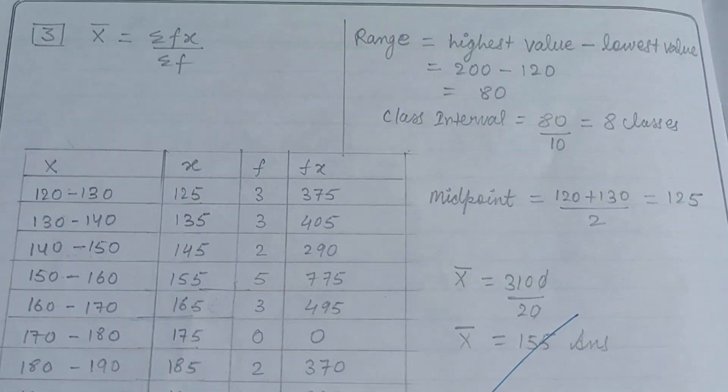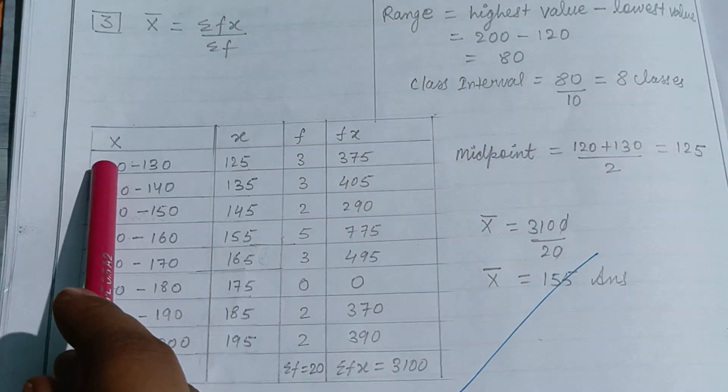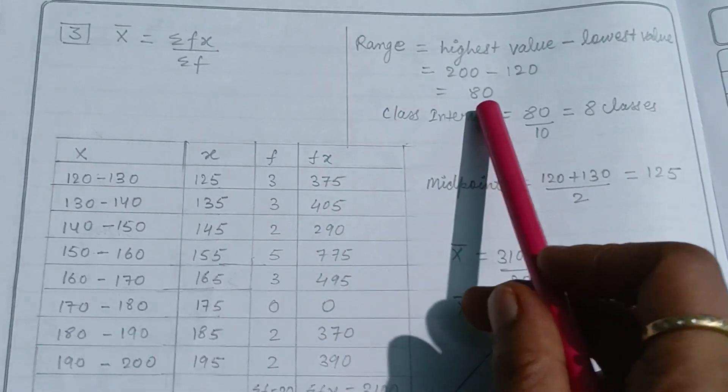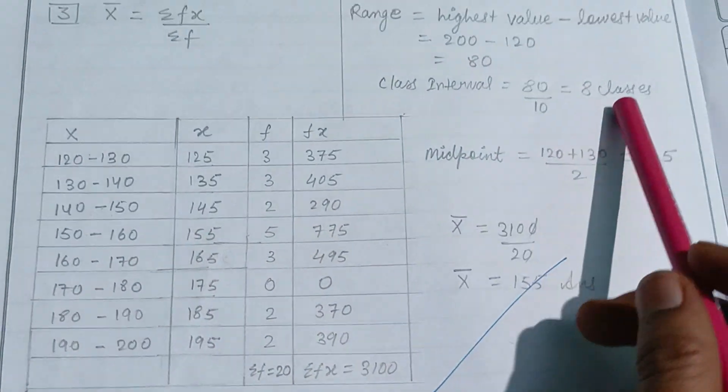By subtracting the highest value minus lowest value. In this, the highest value is 200 while the lowest value is 120 and the range is calculated as 80. So class interval equals 80 divided by 10, so eight classes are formed.